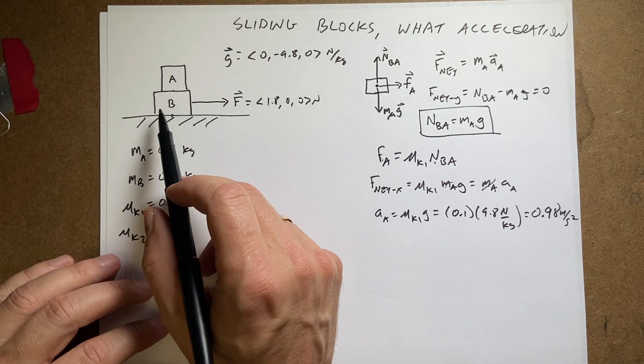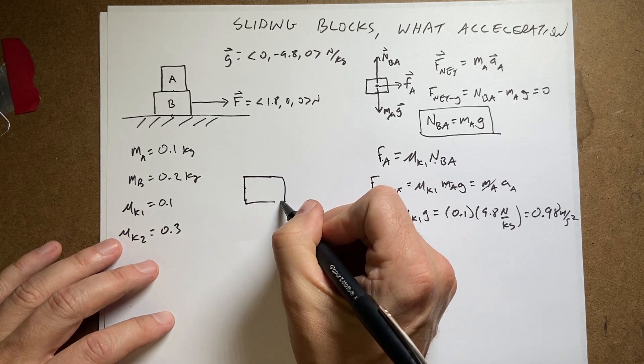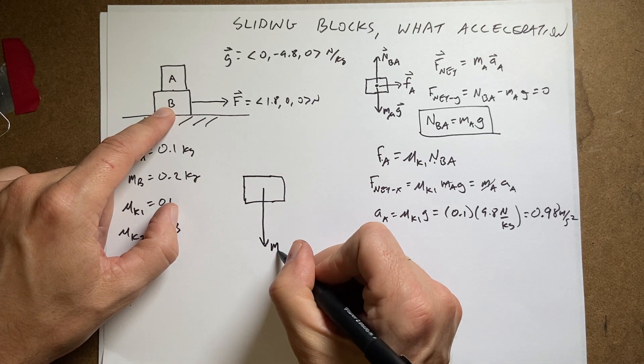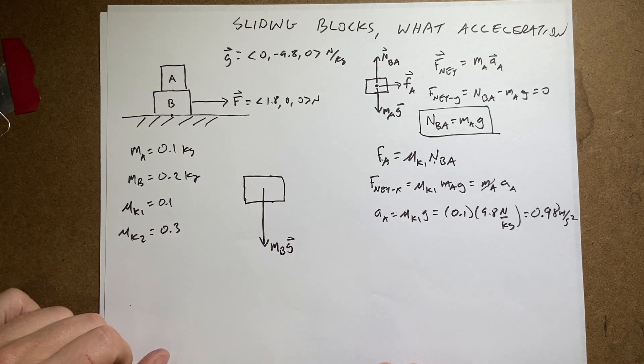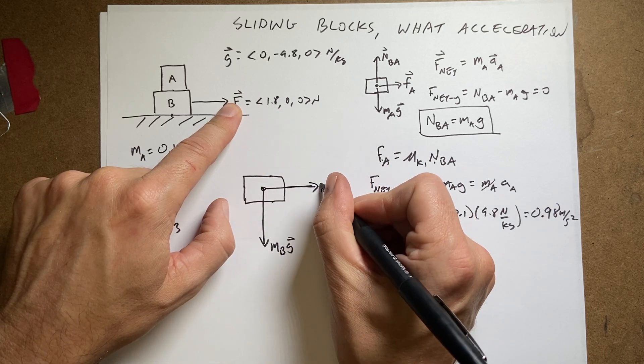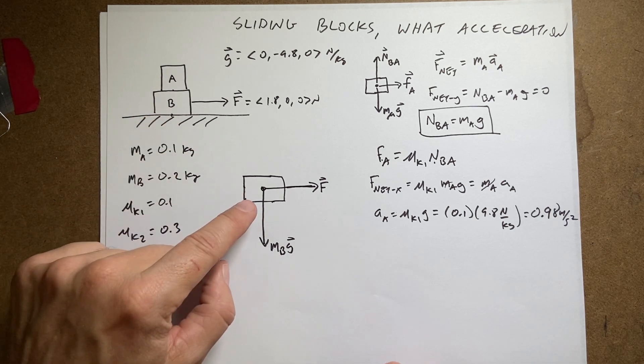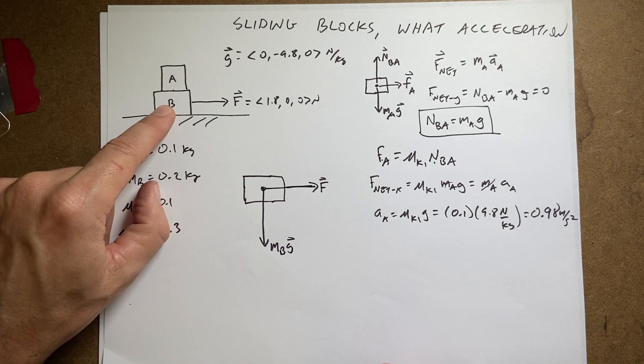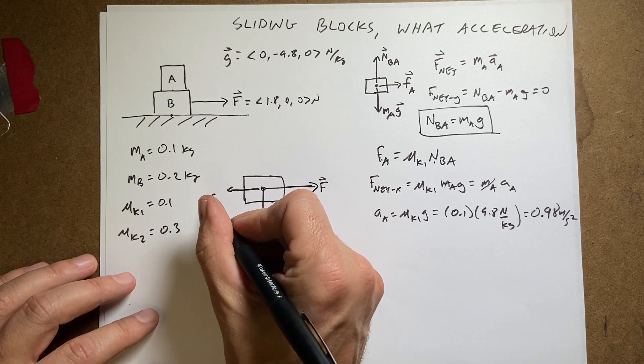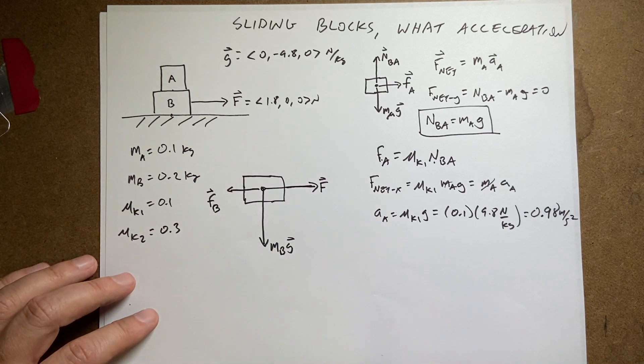Okay, so now what about block B? So let's draw block B right here. What forces are acting on block B? Well, I have the downward gravitational force M B G. I have this force right here, which I'll just call F. There's going to be a backwards frictional force between the bottom surface and the block. If the block's accelerating this way, then there's going to be a backward force. I'll call this F B.